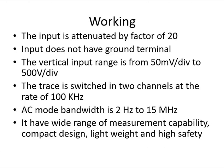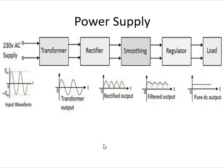The next topic is the power supply. All electronic circuits need a DC voltage for their operation. The DC supply voltage is derived from the single-phase AC mains circuit, and how this supply is derived is explained using the power supply block diagram. The block diagram consists of a step-down transformer, a rectifier circuit, a filter or smoothing circuit, a voltage regulator, and a load.